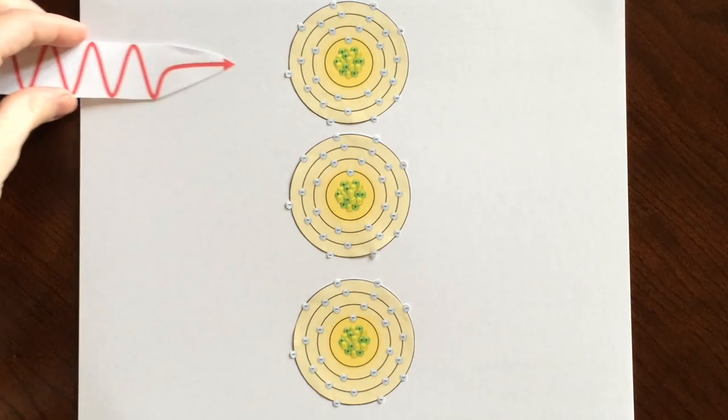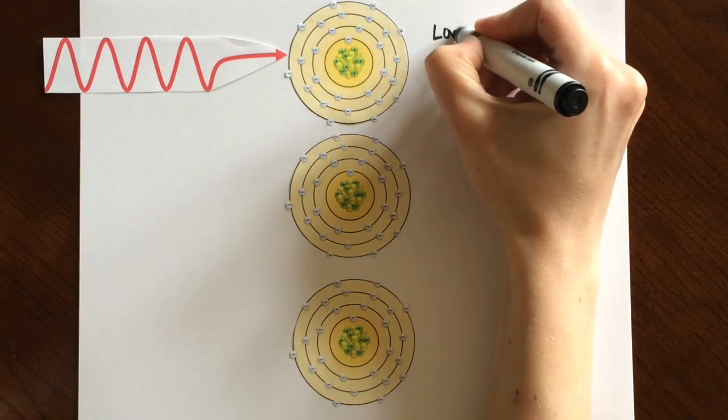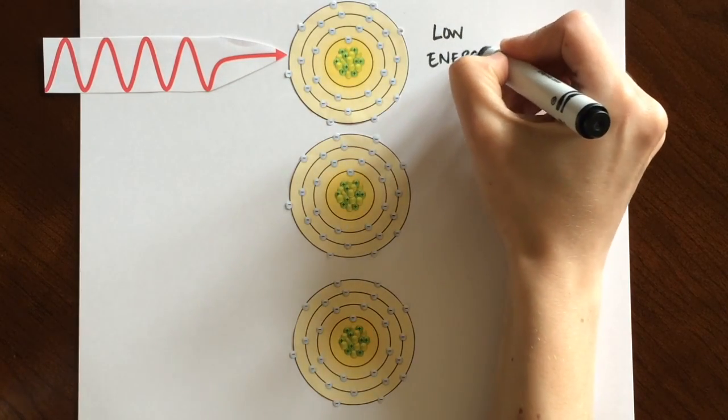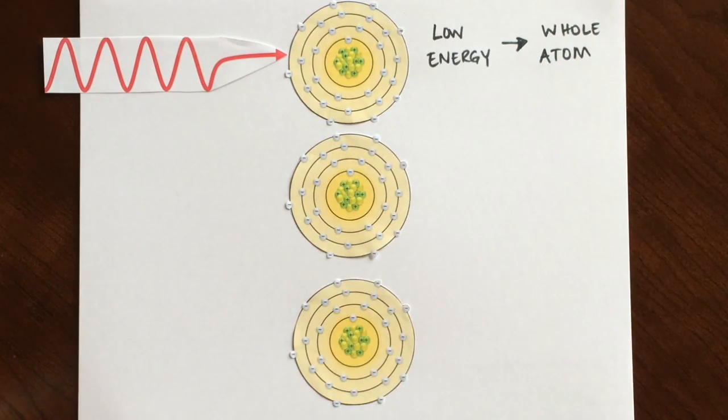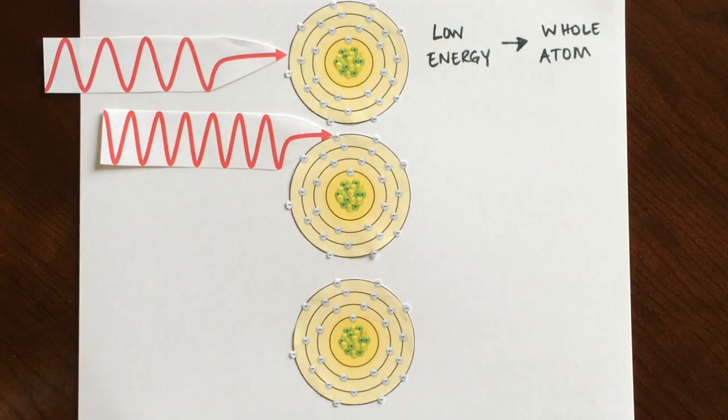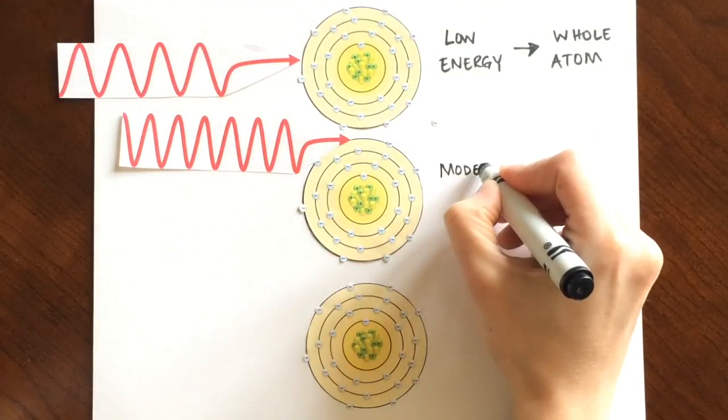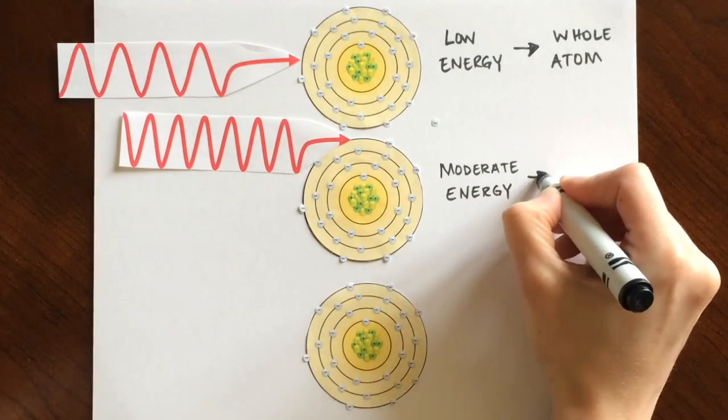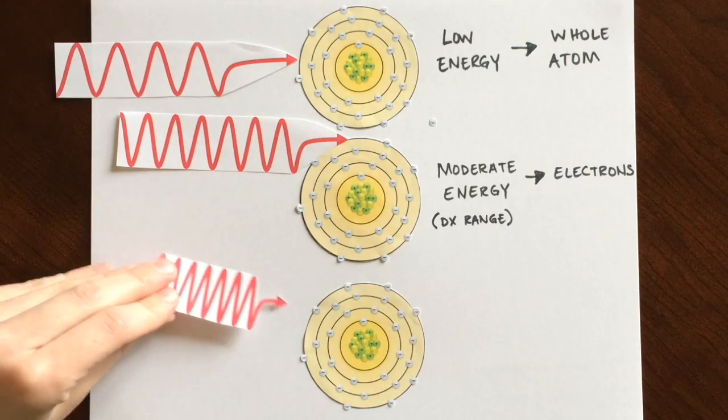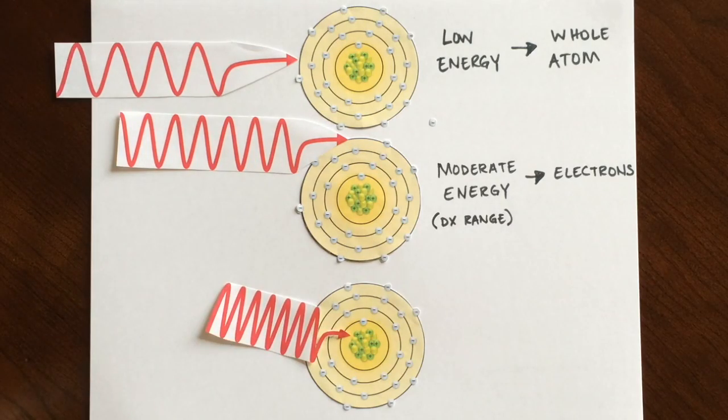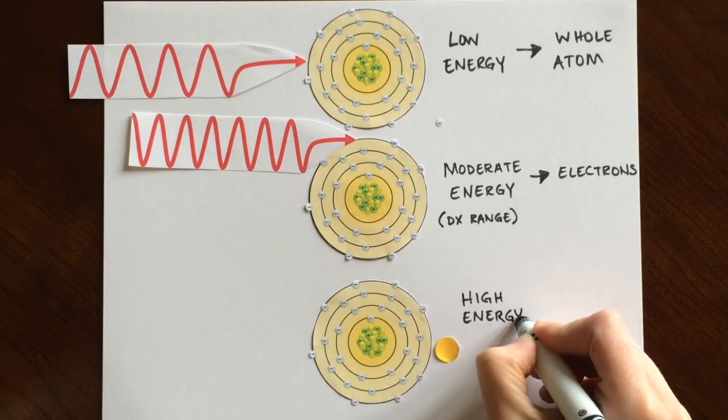If we look at three x-ray photons that travel with increasing energies, you'll see how each interacts with an atom. The first low energy photon travels with a longer wavelength and interacts with the entire atom. The second moderate energy photon travels with a shorter wavelength and interacts with electrons, causing ionization. This is the type of interaction we have in diagnostic radiology. The third high-energy photon has a much shorter wavelength and completely disappears when it interacts with nuclei, creating a nucleon fragment.